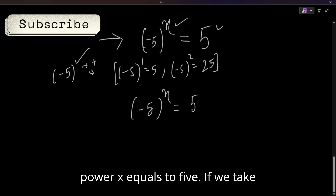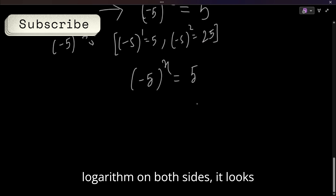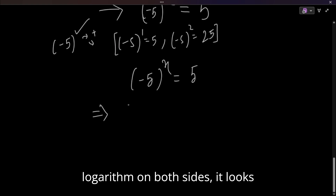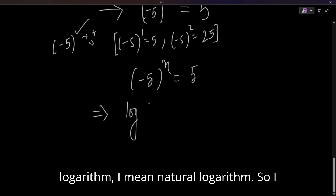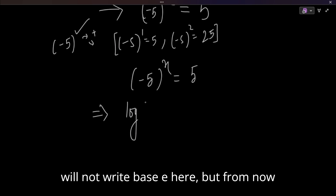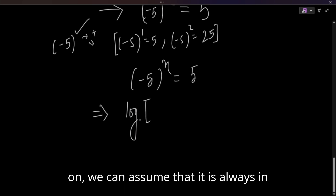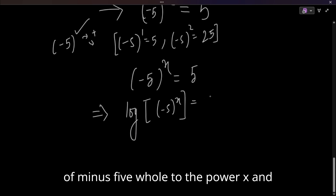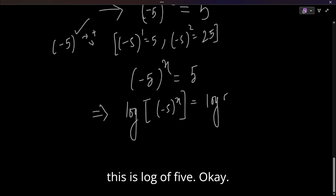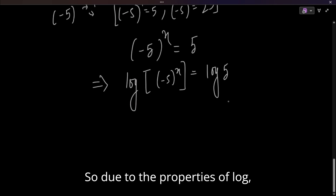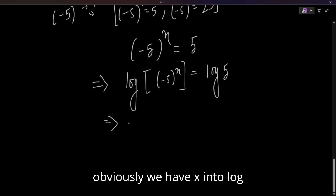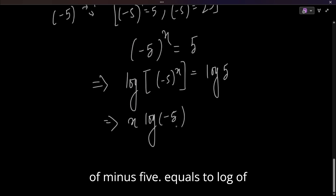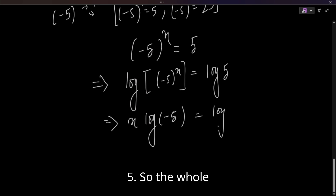So: (-5)^x = 5. If we take the natural logarithm on both sides — from now on, log means natural log, base e — we get: log((-5)^x) = log(5). By the properties of logarithms, this becomes x · log(-5) = log(5). The whole problem revolves around evaluating log(-5).